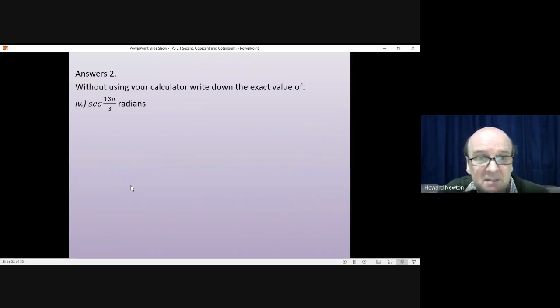A secant of 13 pi divided by 3 radians. Now, 13 pi over 3 is large. The question is, what's the best thing to do with it? Well, sine and cosine, secant and cosecant, they repeat every 360 degrees. I think the simplest thing to do with this, if you didn't have a calculator, is take away multiples of 360 degrees until it becomes a sensible size.